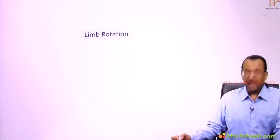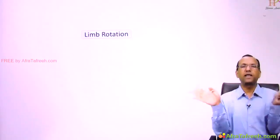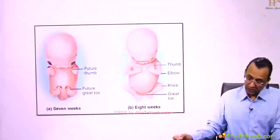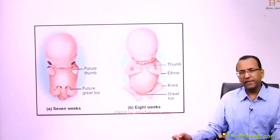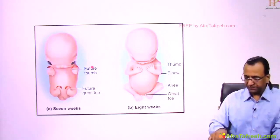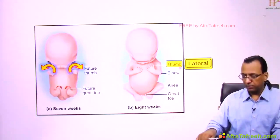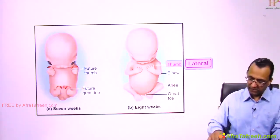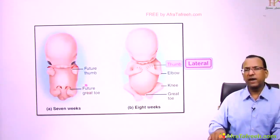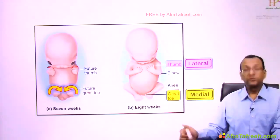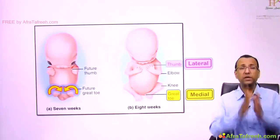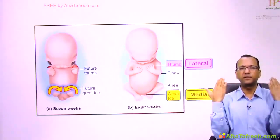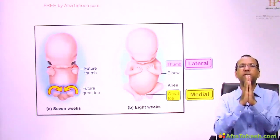There is an embryology concept of limb rotation. The upper limb rotates laterally by 90 degrees, so in anatomical position the thumb is found lateral. The lower limb rotates medially by 90 degrees, so the great toe is on the medial side. Because of these rotations, the flexor compartment is anterior in the upper limb and posterior in the lower limb.